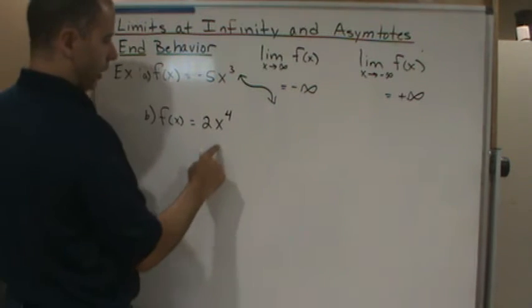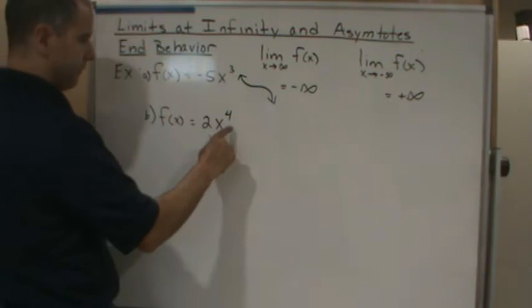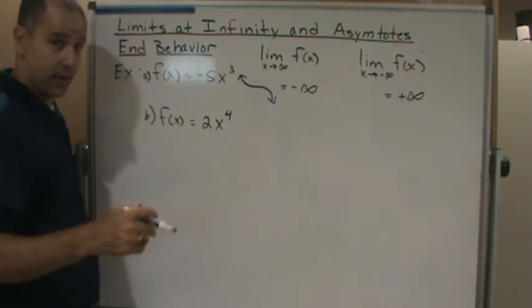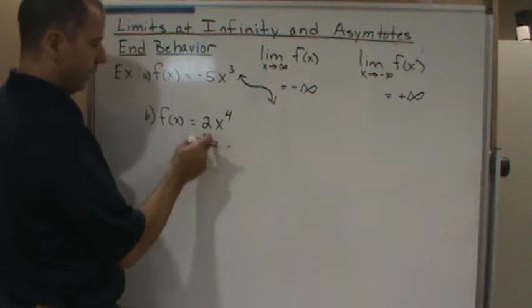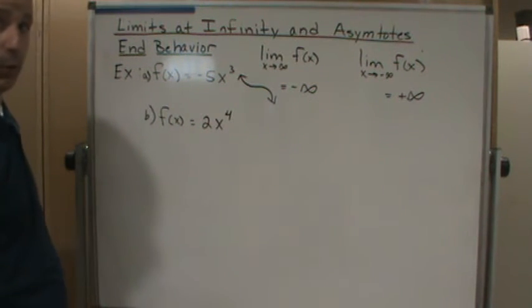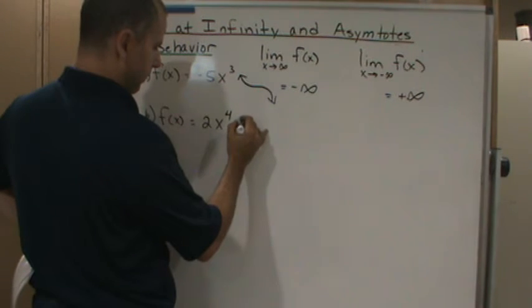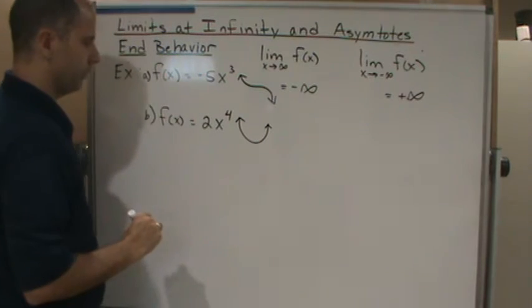Now what about this one? Well, this one has an even degree polynomial, so the leading term is even degree. That means the tails are going in the same direction, either both up or both down. And the fact that the leading coefficient is positive means that they're both going up, so that means it's going to have something like this.